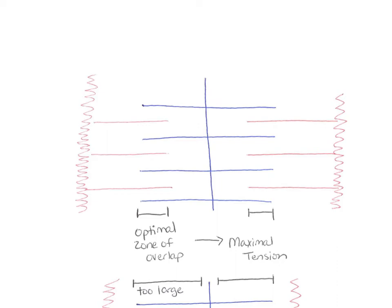Let's look at the zone of overlap, which describes how the fiber's resting length at the time of stimulation affects the amount of tension in a muscle. Here is our sarcomere — we can see the zone of overlap, where the red thin filaments overlap with the blue thick filaments. This tells us how many cross bridges can occur because the myosin heads can only attach to the actin molecules in that zone of overlap. When the muscle fiber is stimulated to contract, only the myosin heads in that zone of overlap can bind to the active sites and produce tension. We call this the length-tension relationship.